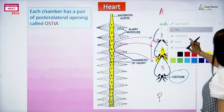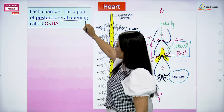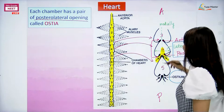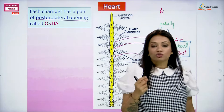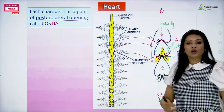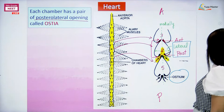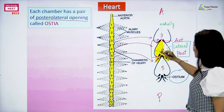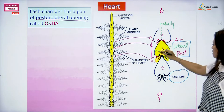Each of the chambers has a pair of posterolateral openings and that posterolateral opening is called ostia. Each of the chambers has this ostia. The ostia close naturally whenever the whole chamber is filled with blood - that is what makes the ostia close.